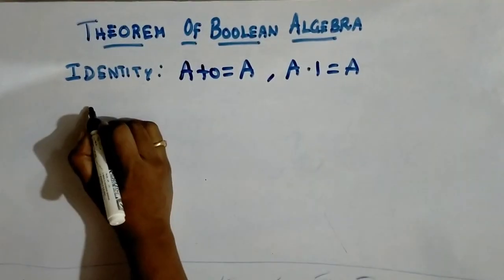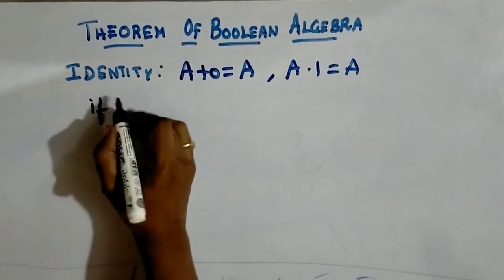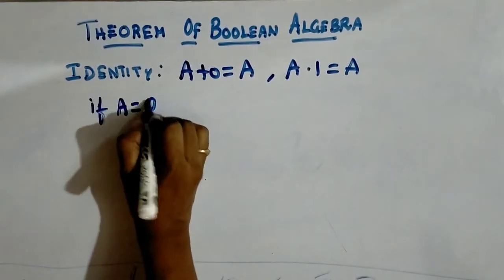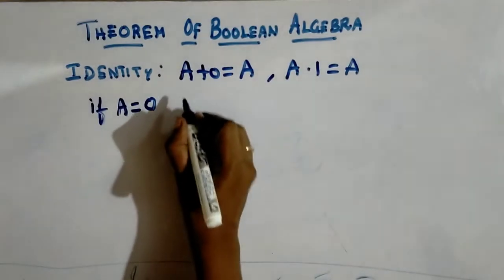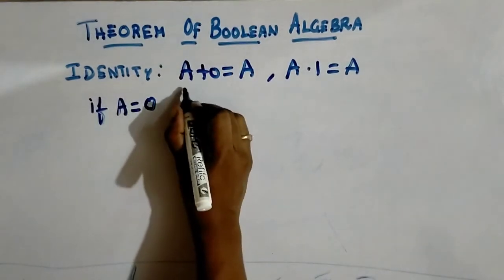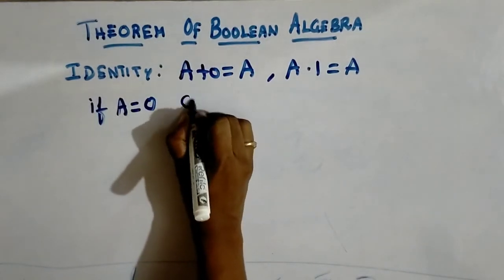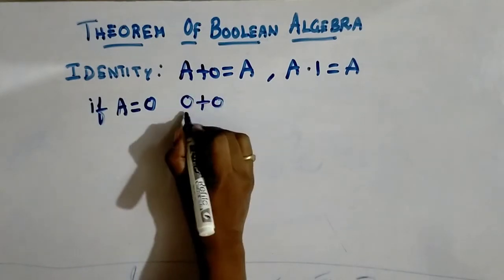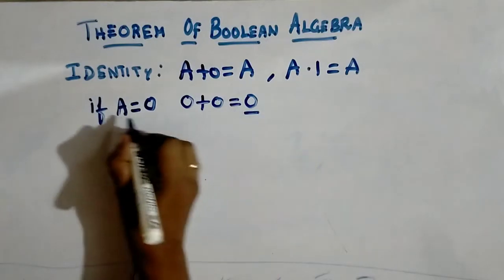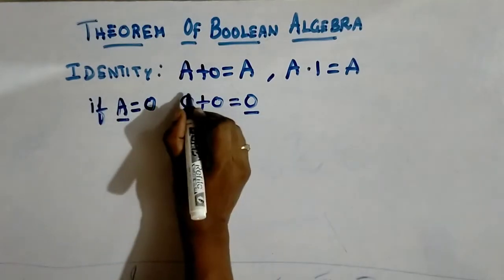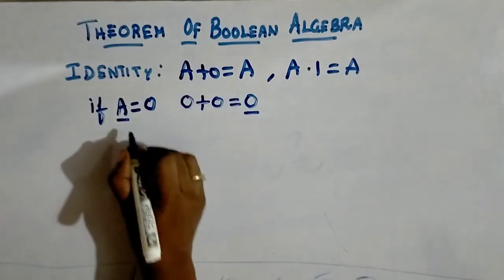Let's see that. Just substitute a value equal to 0. How are we getting a plus 0 equal to a? If we substitute a as 0, we get 0 plus 0. What is 0 plus 0? It is 0. So this 0 is the same as a. That's why a plus 0 equals a.